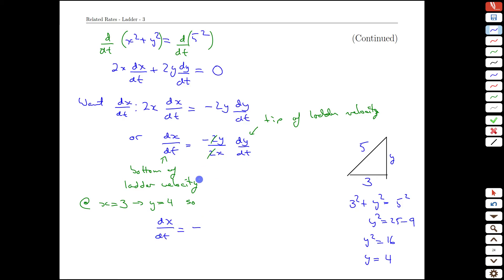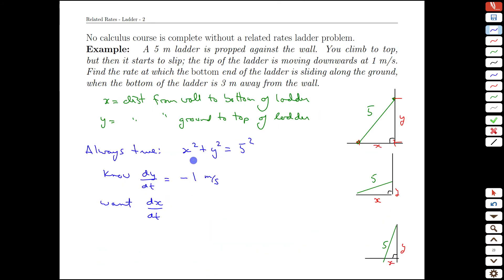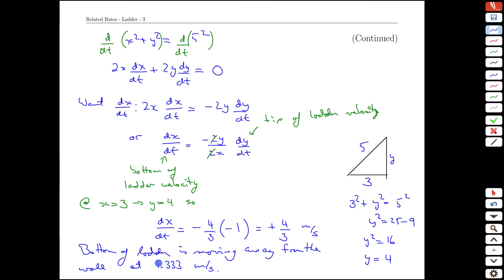So dx/dt, filling in all the blanks, is negative y over x, negative 4 over 3 times dy/dt, which was negative 1 meter per second. And so we get positive 4 thirds. Natural units of x and t are meters and seconds, so meters per second. We would say then that the bottom of the ladder is moving away from the wall at roughly, not exactly 4 thirds, but at 1.333 meters per second. So another archetypal related rates problem where we have a relationship between the quantities, the two distances, and that led us through differentiation to a relationship between how fast they were each changing over time. We could freeze frame at a particular instant and ask at that instant, what's a particular rate and what's its value?